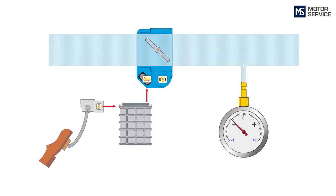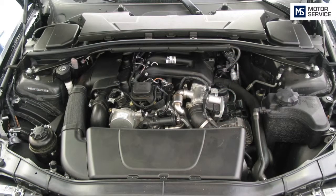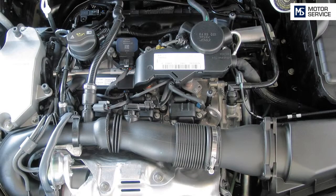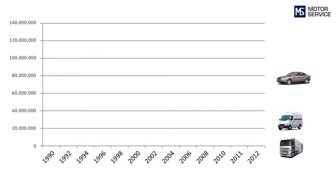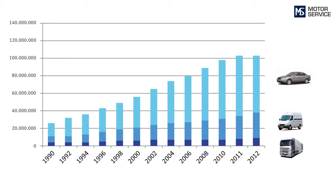Vacuum pumps are installed in vehicles that do not have sufficient vacuum. Conventional diesel engines are fitted as standard with a vacuum pump, as they have no throttle and cannot therefore generate any vacuum. Vacuum pumps are also increasingly found in petrol engines, where there is insufficient vacuum in the intake manifold after the throttle valve. For these reasons, and due to the rising popularity of diesel in recent years, more pumps are installed today than ever before.